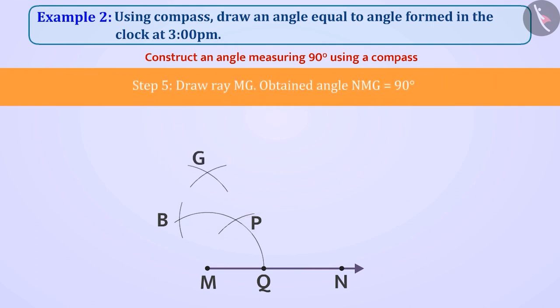Step 5. Now we will draw a line MG which will start from M and will go till G. Then we will get angle NMG whose measurement is 90 degrees.